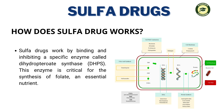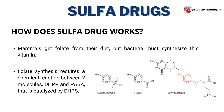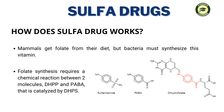How do sulfa drugs work? Sulfa drugs work by binding and inhibiting a specific enzyme called dihydropteroate synthase (DHPS). This enzyme is critical for the synthesis of folate, an essential nutrient. Mammals get folate from their diet, but bacteria must synthesize this vitamin. Folate synthesis requires a chemical reaction between two molecules, DHPP and PABA, that is catalyzed by DHPS.